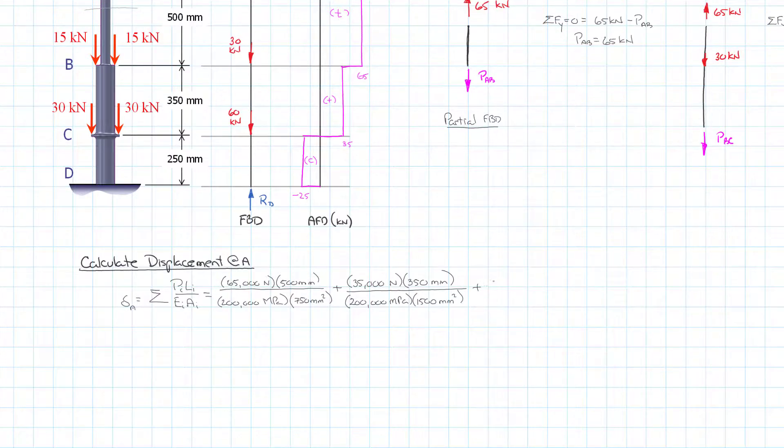We go right on to section CD. Section CD now we have a negative force because it's in compression, so the displacement is actually going to be a shortening rather than an elongation. We have negative 25,000 newtons and the length between C and D is 250 millimeters, and 200,000 MPa and its area is the same as BC or 1500 millimeters squared.